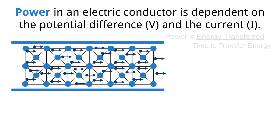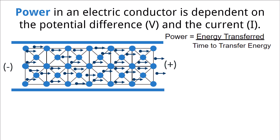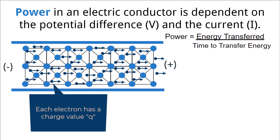Power is how much energy is transferred over a period of time. In the case of electric energy, we are considering how much energy is transferred by the electrons as they move. To imagine this, consider a conducting rod with a potential difference between either end. We know the electrons will move at some rate called the current, and each electron carries with it a charge q. The total charge moving through the conductor is equal to the current times the change in time. We also know that the amount of energy transferred or work done is the charge q times the potential difference.